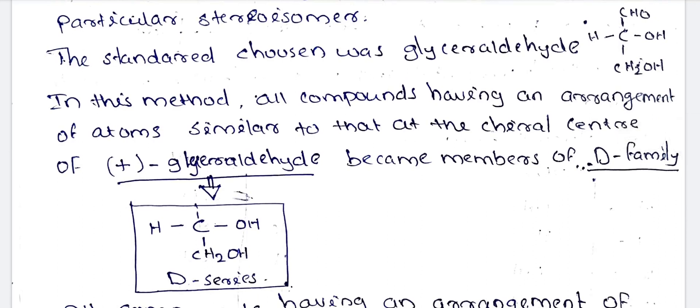A chiral carbon is defined as a carbon with four different groups attached to it — four valences satisfied by four different groups. For example, a carbon can have CHO on one side, H on the right, and OH on the left. With four different groups, this qualifies as a chiral carbon.